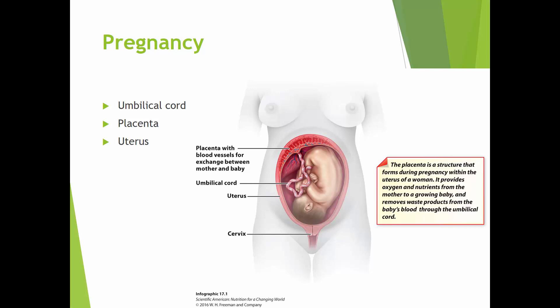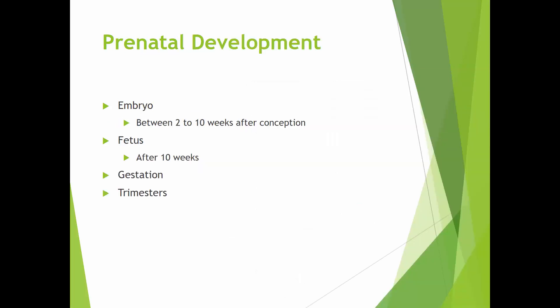A couple of things you need to know in terms of organs: obviously the uterus is where the baby is growing. You also have to look at the placenta, which is the structure that forms within the uterus and is responsible for allowing oxygen and nutrients to get from the mother to the growing baby. Then you have the umbilical cord, which connects the placenta to the growing child.